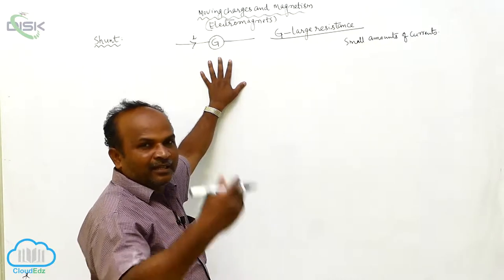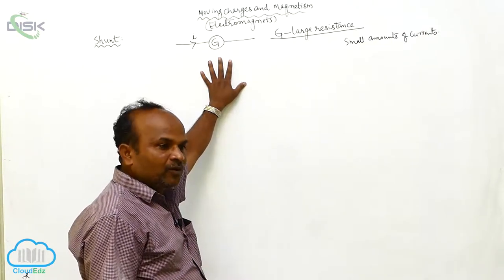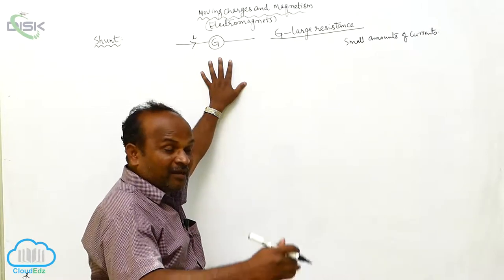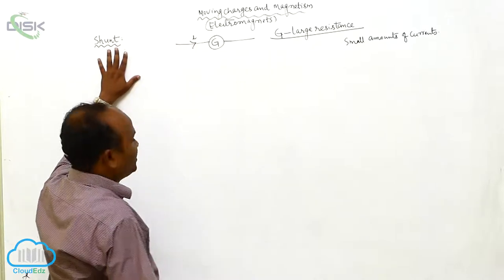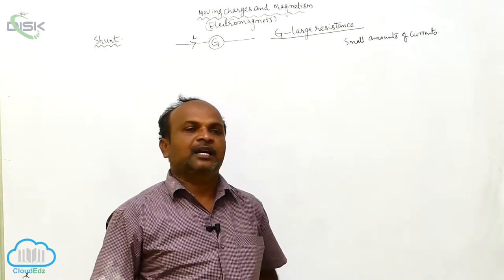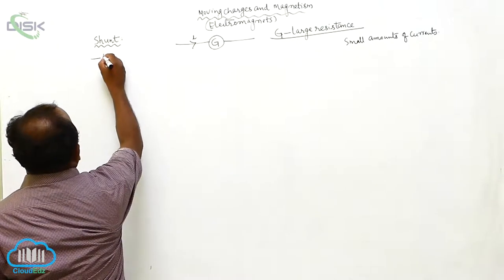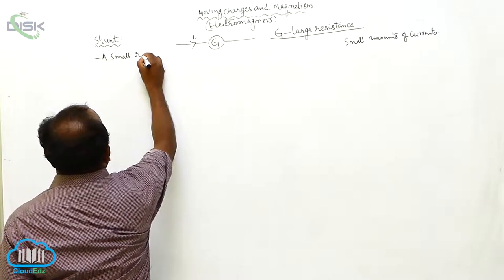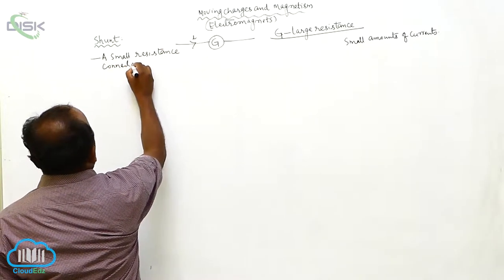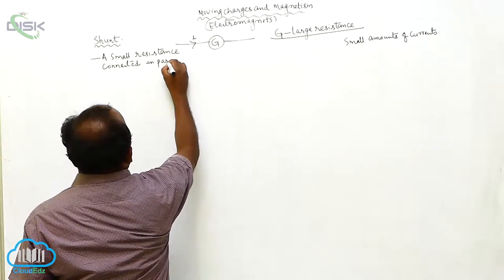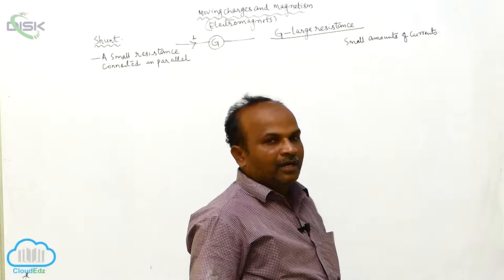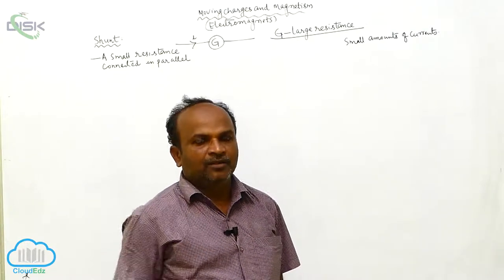The galvanometer will be heated very much. Therefore, to avoid damage to the galvanometer due to large currents — to prevent the galvanometer from large currents — we use the shunt concept. What is the shunt? A small resistance connected in parallel is called the shunt resistance.